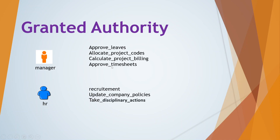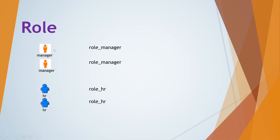So in order to avoid the problem of assigning each authority individually, we can group these authorities into an entity and assign that entity directly. That way we don't have to repeat allocating all these authorities to each manager separately. We can allocate that entity directly, which contains all these authorities and grants all these permissions to the particular manager. That entity is called a Role.